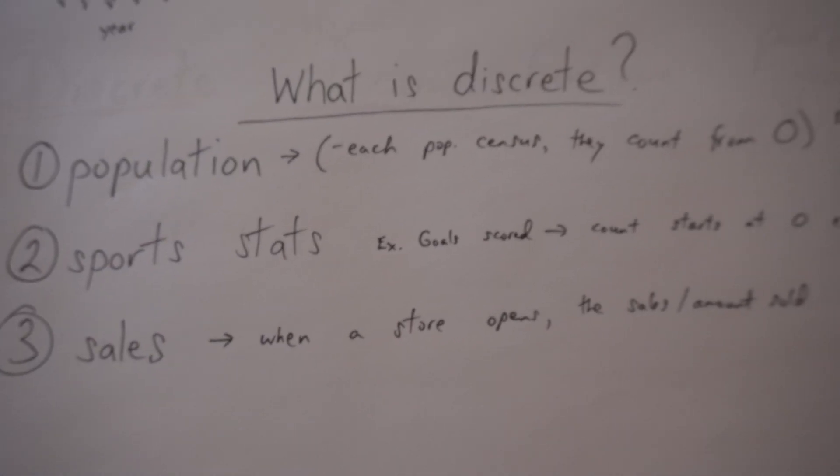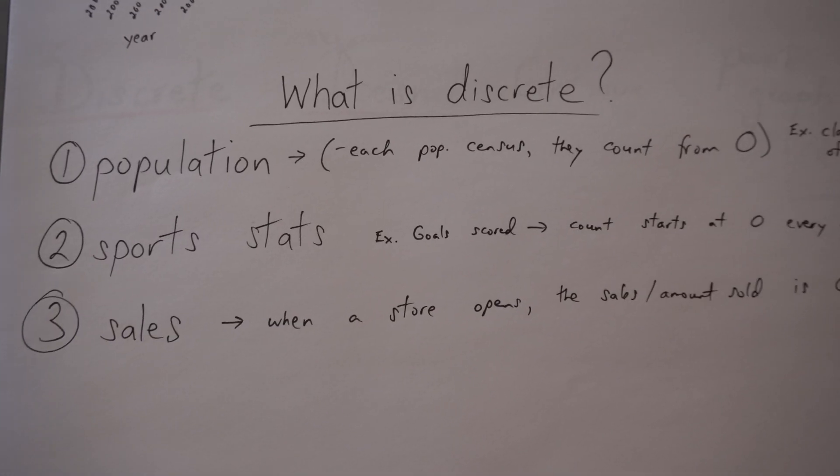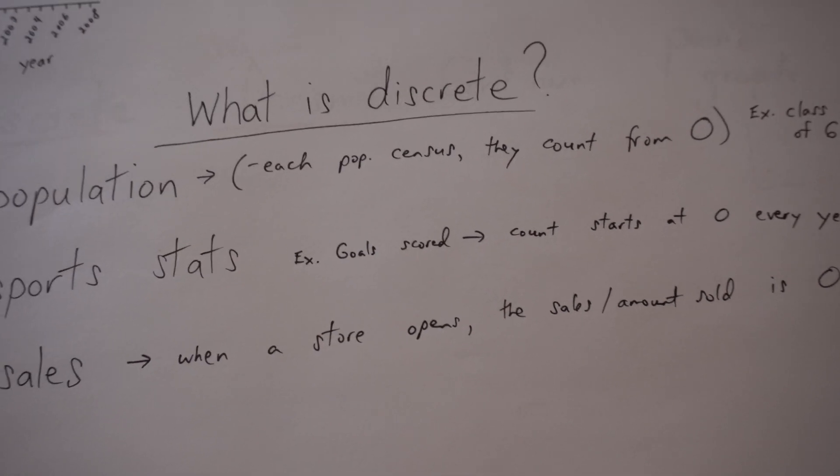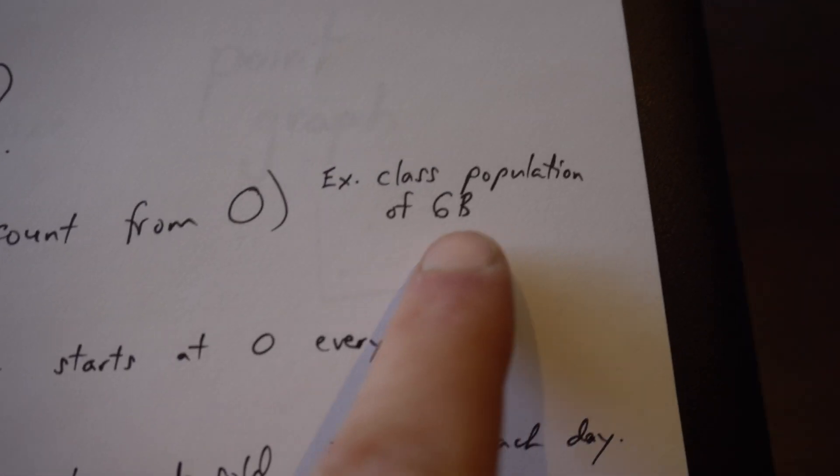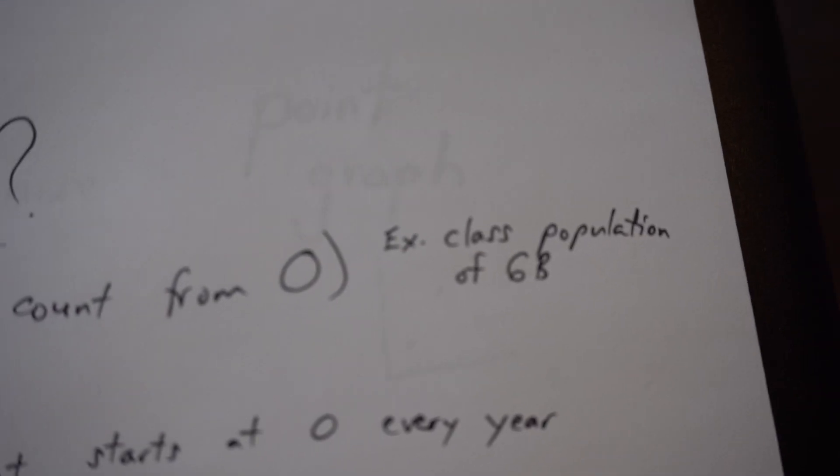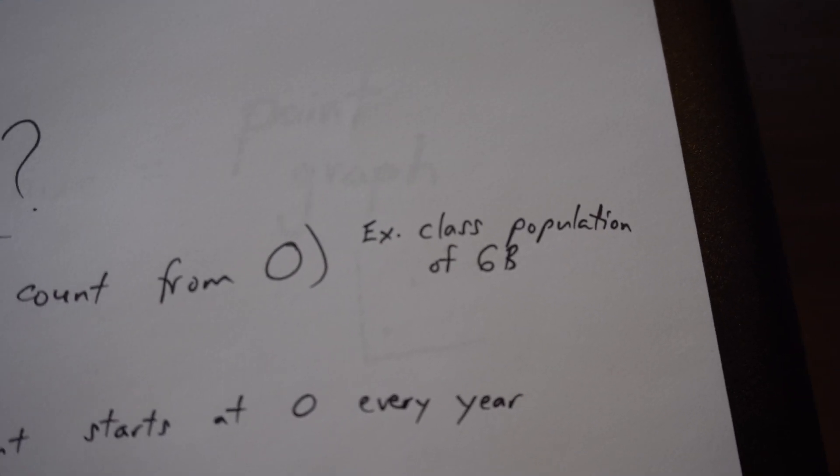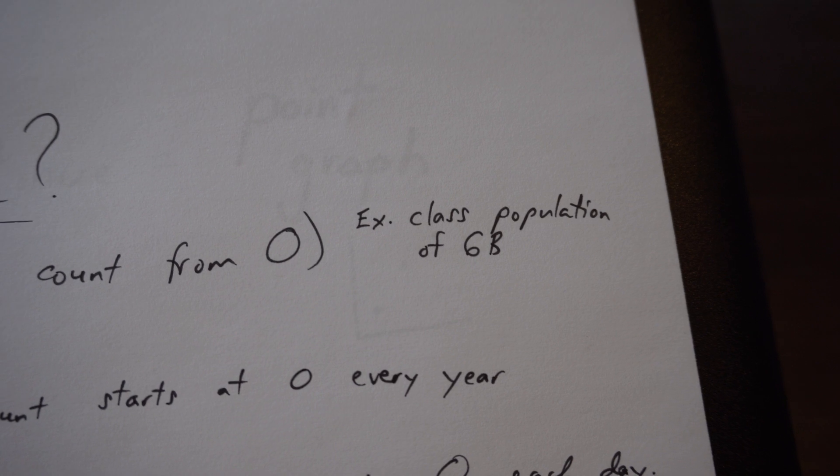So what is discrete? Population is discrete because they do a census. They count the population. Each time they count, they start from zero. Each time I get a new class, you guys all move on. The new class comes, and that class gets built up and counted up from zero.